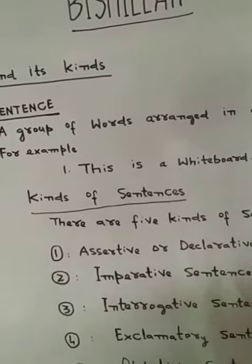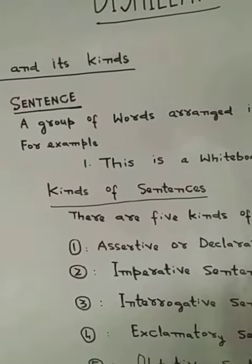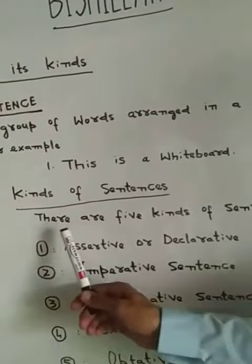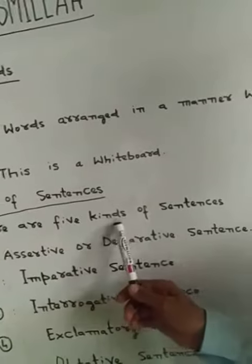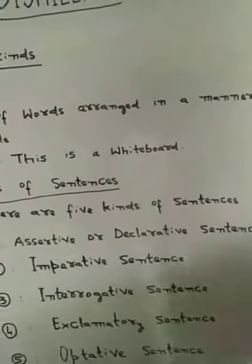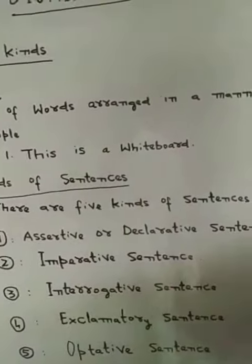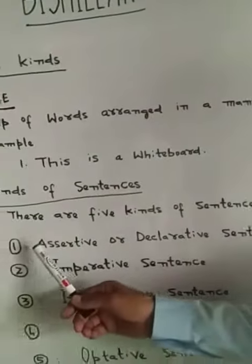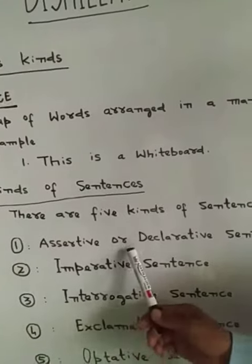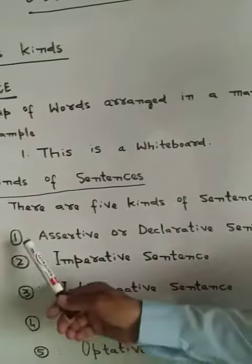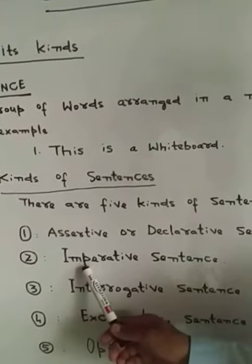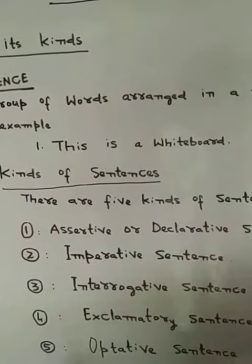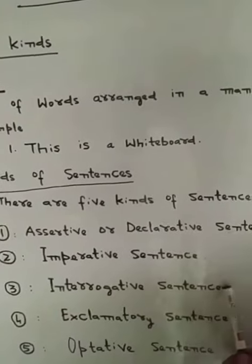Kinds of Sentences. There are five kinds of sentences. Number one is assertive or declarative sentence. Number two is imperative sentence. Number three is interrogative sentence.